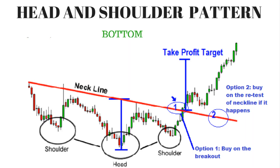Next we are going to see head and shoulders bottom. The pattern contains three successive troughs, with the middle trough — the head — being the deepest, and the two outside troughs — the shoulders — being shallower. Ideally, the two shoulders would be equal in height and width. The reaction highs in the middle of the pattern can be connected to form resistance, or a neckline.